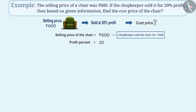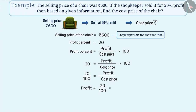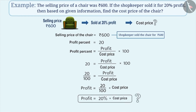In the previous video, we learnt that profit percent = (profit / cost price) × 100. That means 20 = (profit / cost price) × 100, i.e., 20/100 = profit / cost price, so profit = (20/100) × cost price, which we can also write as profit = 20% × cost price. Think about what you understand from this.